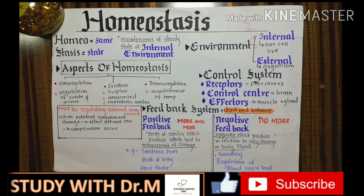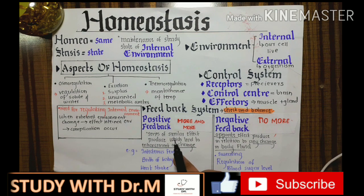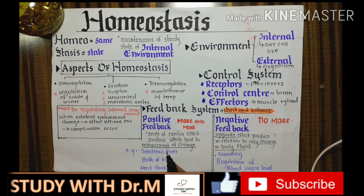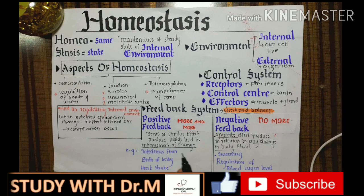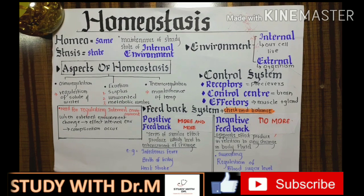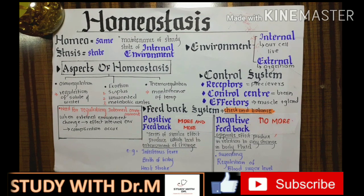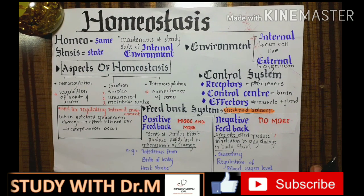Examples of positive feedback: first, infectious fever. It is a blessing that whenever pathogens enter our body, the body produces substances like pyrogens that increase body temperature, giving us a fever. After one or two days we are healthy again, because this fever fights the infectious pathogen.